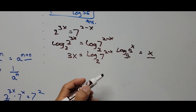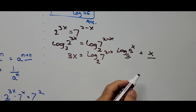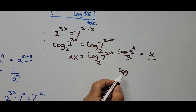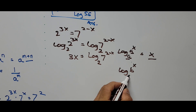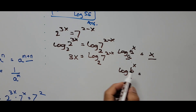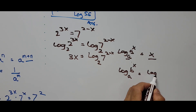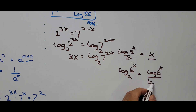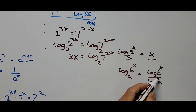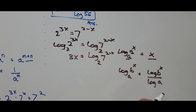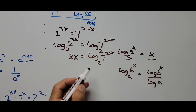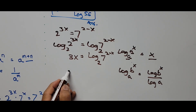There's another law of logarithms — the change of base formula. Log of b raised to x to base a can be written as log of b raised to x divided by log of a, converting to base 10. The exponent and the base a split, with log of a moving to the denominator. Applying this to the right side gives 3x equals log of 7 raised to 2 minus x divided by log of 2.